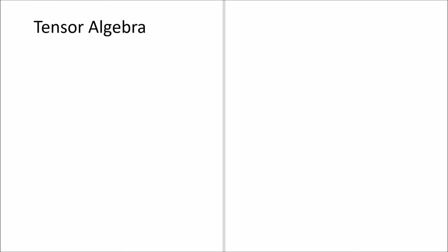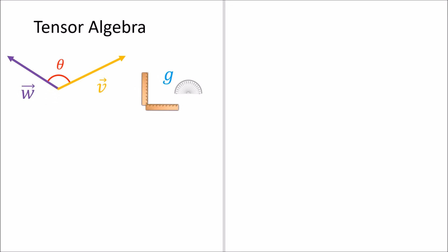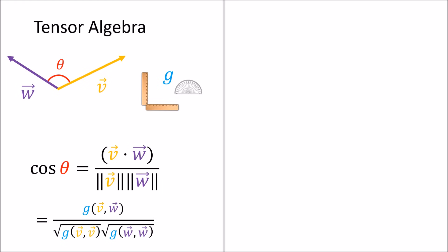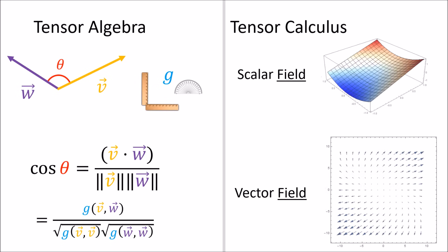That more or less sums up what you would have learned in my Tensors for Beginners video series — what I would call tensor algebra, which is the study of manipulating individual tensors in different coordinate systems. In basic tensor algebra we usually consider only a few tensors at a time; for example, taking a pair of vectors and measuring the angle between them using the metric tensor. With tensor calculus, however, we stop dealing with individual tensors and start considering tensor fields, which are infinite collections of tensors where the tensor changes at every point in space.